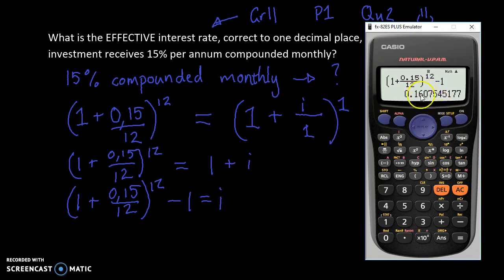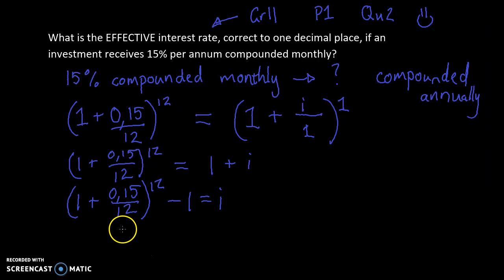So the interest rate, the effective interest rate, is going to be 0.16075. Let's see if I can remember it now. So 0.16075, and it goes on for a while.